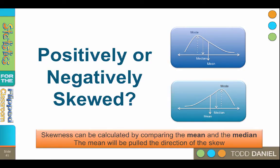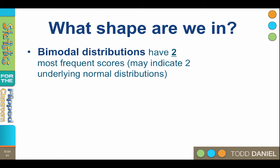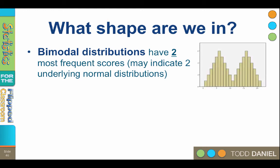But there are other things that can go wrong with our normal curve. Instead of having one peak, sometimes we have two peaks. This occurs when there is more than one most frequently occurring score. We call this type of curve bimodal. A curve can be bimodal when there really are two most frequently occurring scores. For instance,